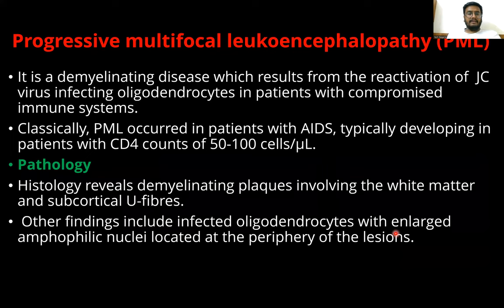Next is progressive multifocal leukoencephalopathy (PML). It is a demyelinating disease resulting from the reactivation of the JC virus, infecting oligodendrocytes in patients with a compromised immune system. PML classically occurs in patients with AIDS, typically developing in patients with a CD4 count of 50–100 cells per microliter. Histology reveals demyelinating plaques involving the white matter and subcortical U-fibers.